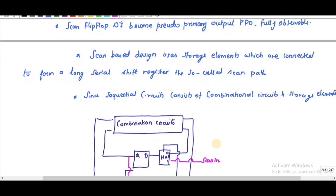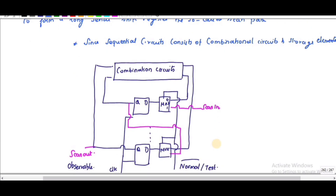Since a sequential circuit consists of combinational circuits and storage elements, the actual sequential circuit additionally has N number of muxes compared to the flip-flops. The scan path is inserted whenever the test mode is selected — when scan mode is selected, the mux select goes to one, so the scan-in (SI) pin goes to the mux output and gets stored in the flip-flop output. One flip-flop output is connected to the next flip-flop's mux input, forming a chain, and from the last flip-flop output we take the scan-out.